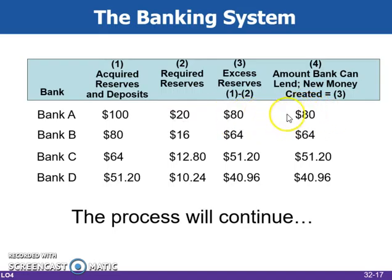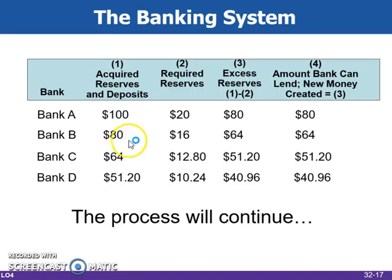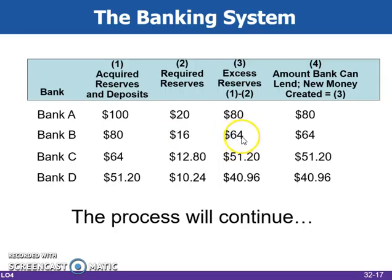After they lend out the $80 to their customer, that customer then takes the $80 and puts it into their bank account at Bank B. Of that $80, Bank B must keep $16 on hand; therefore they can lend out $64, and so on. The process continues until there's nothing left.